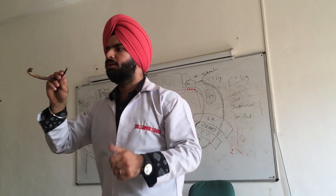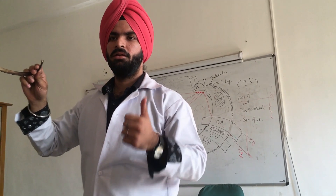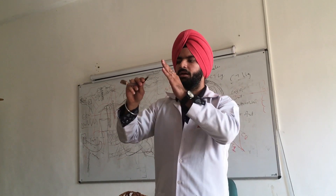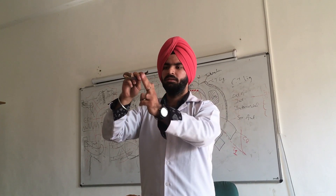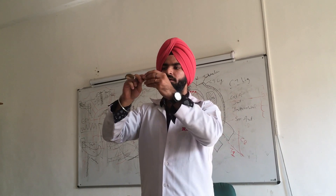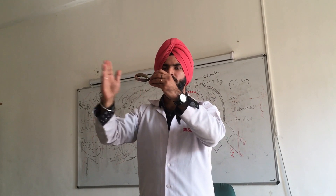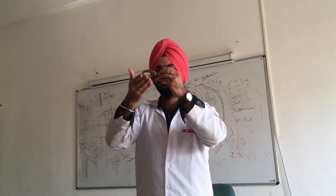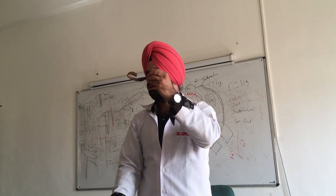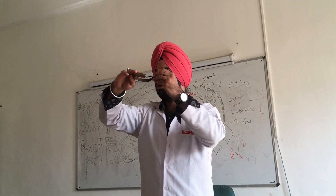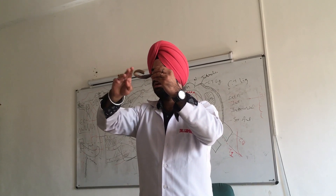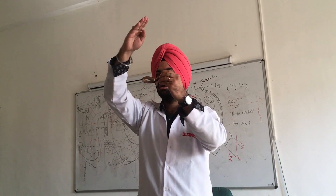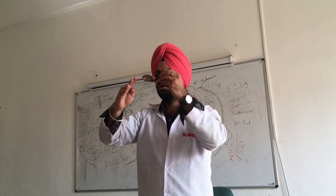A typical rib has 2 ends, 2 surfaces, and 2 borders. This is the posterior end, this is the anterior end, this is the outer surface, this is the inner surface, this is the superior border, and this is the inferior border. The superior border has 2 lips: outer lip and inner lip. The outer lip muscle attachment is the external intercostal muscle.